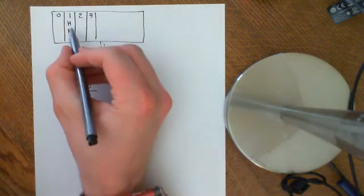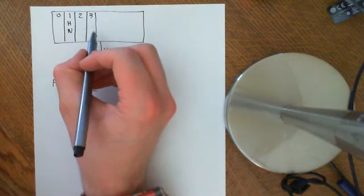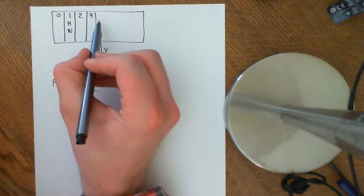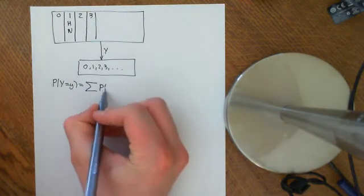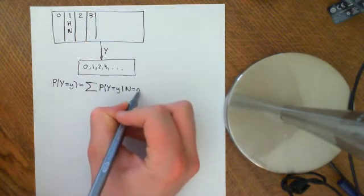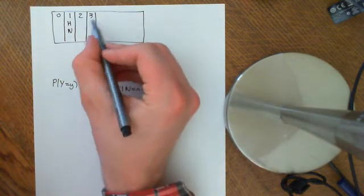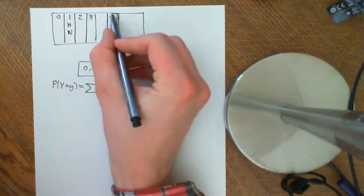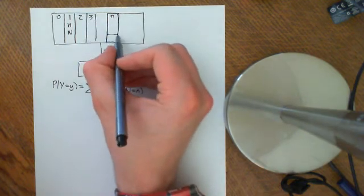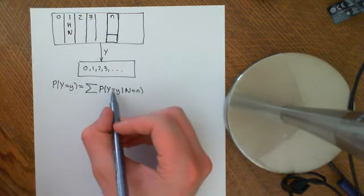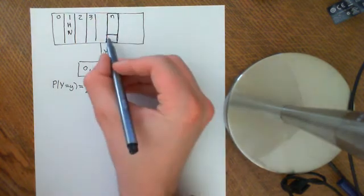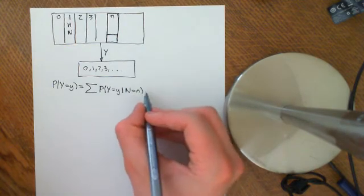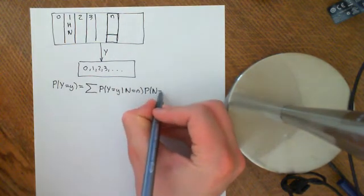We're going to partition the setup — we're going to condition on knowing the number of eggs that the chicken made. So we're going to partition the setup into these events that the chicken made a certain number of eggs, and we'll work out what the probability of big Y being little y is, given that that event has happened. We now view this event — the chicken made n eggs — as the entire probability space, and we work out what's the probability that Y is equal to little y. And then to scale it back up into the whole probability space, we just multiply by the probability that big N is equal to little n.